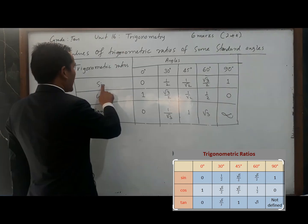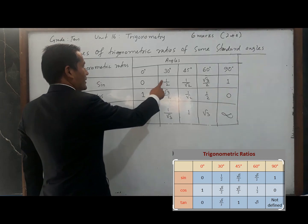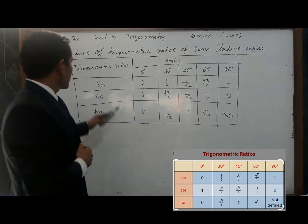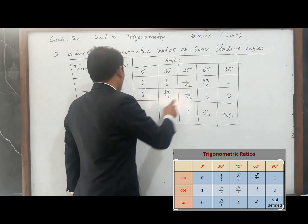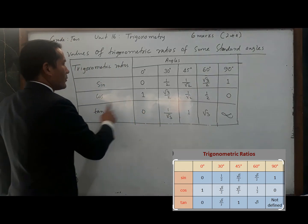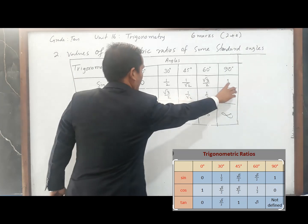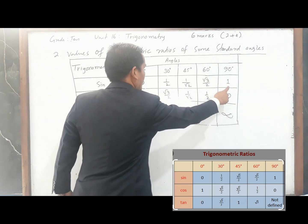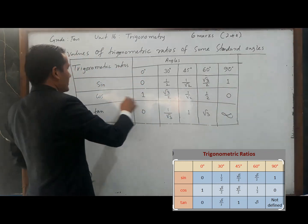Now it is very simple to remember. Sine 0 is 0, sine 30 is 1 by 2, sine 45 is 1 by root 2, sine 60 is root 3 by 2, and sine 90 is 1. If you do the reciprocal—just opposite—0, 1 by 2, 1 by root 2, root 3 by 2, and 1, you will get the value of cos.